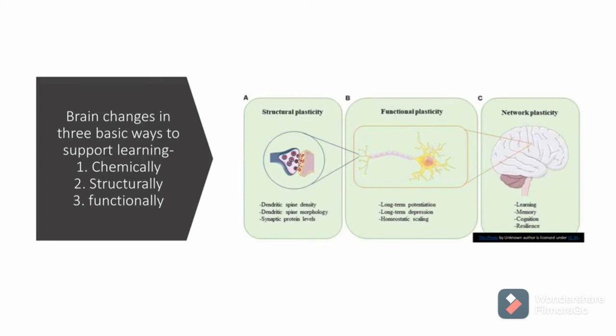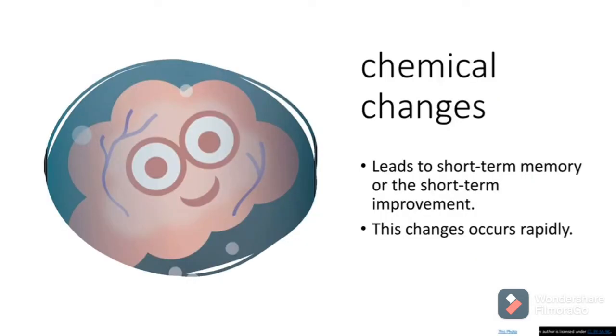Speaking about chemicals, our brain functions by transferring chemical signals between neurons, that we call brain cells, and triggered a series of actions and reactions. So to support learning, brain increases the amount or the concentrations of this chemical signaling taking place between neurons. This helps in short-term memory or the short-term improvement. Well, this change occurs very rapidly.